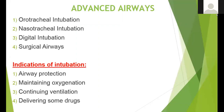Now we have done bag and mask ventilation, but if the patient needs more, we go for advanced airway — meaning intubation. We have different ways of intubation: oral tracheal or nasotracheal, and each facility may be familiar with one or both. Sometimes we use digital intubation, and if intubation is difficult or unsuccessful, we go for surgical airways.